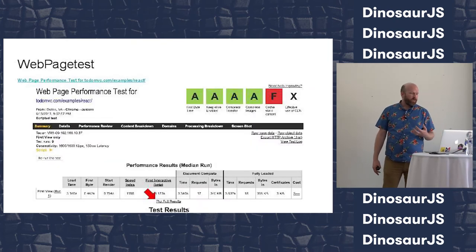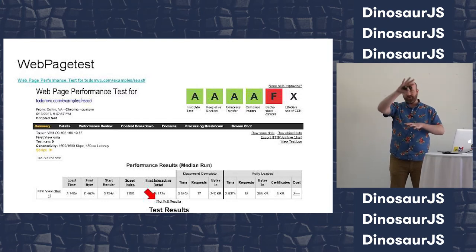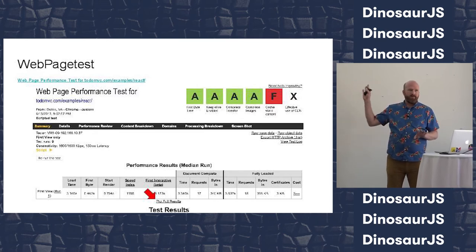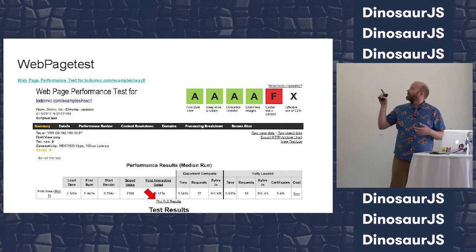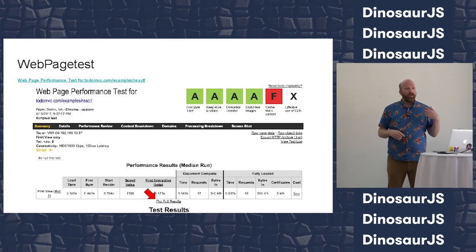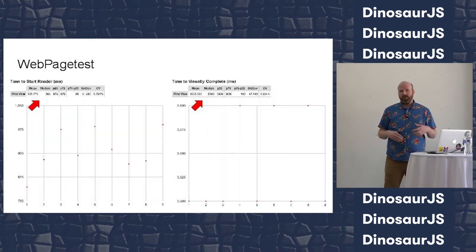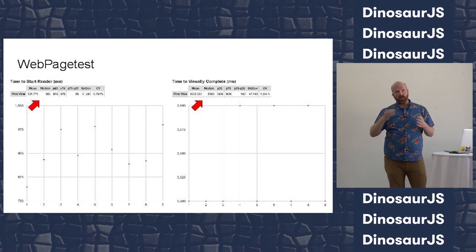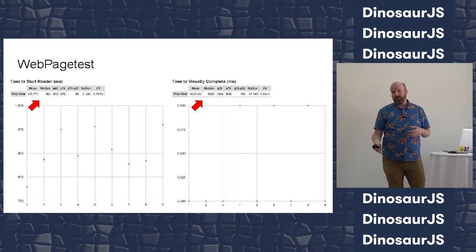Once you run WebPageTest and get results, for every single run you can click in and see the network requests and when they came back. But what I really want to highlight is a tiny link that says 'plot full results.' This is what we actually want when doing a performance experiment — it plots every result from all the different runs and lets you look at summary statistics like the mean and median, giving you a good picture without doing all the math yourself.